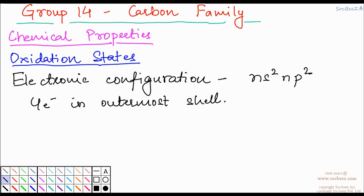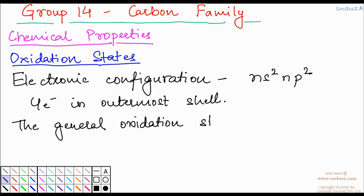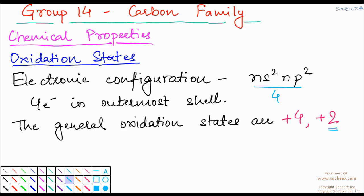Due to this fact, the oxidation states of the group 14 elements are +4 and +2. Now you may be wondering that since there are 4 electrons, how can the oxidation state be +2. The reason is the inert pair effect, which I also mentioned when I taught you group 13 elements.